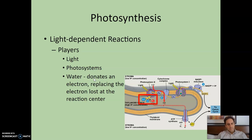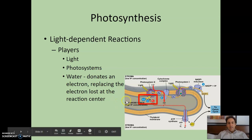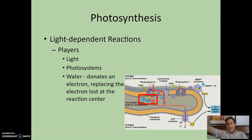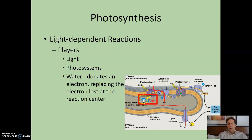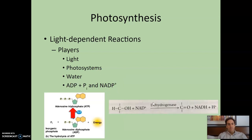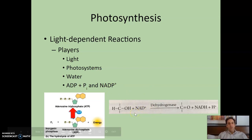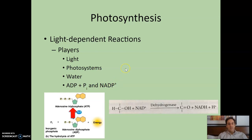The next player is water. Water donates an electron, replacing the electron lost at the reaction center. The primary electron acceptor snags an electron, and water ultimately replaces the electron that came from chlorophyll. Note that water becomes oxygen after donating that electron — the reverse of cellular respiration, where oxygen accepted an electron to become water. Other players are ADP and phosphate, and NADP+. NADP+ is just like NAD+ — an electron carrier that plays a role in cellular respiration — but it's a slightly different molecule. Think P for photosynthesis.